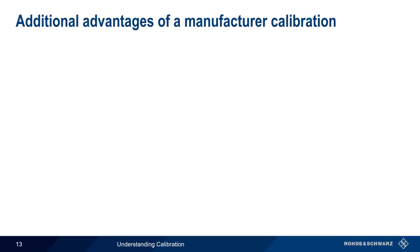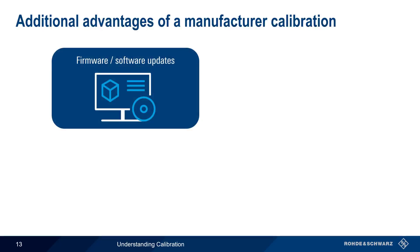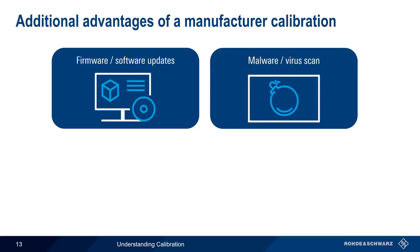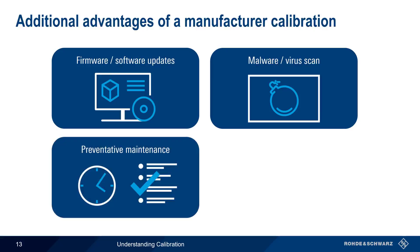There are some additional advantages of manufacturer calibration over third-party calibration. Updating the instrument's firmware, software, or operating system is a standard procedure during a manufacturer calibration. In addition, instruments are also scanned for viruses and other types of malware in order to ensure the safety and performance of the instrument. The manufacturer can also perform various types of preventative maintenance or hardware updates as part of the calibration — third parties normally would not have the knowledge or expertise to perform these changes, which are often provided free of charge.